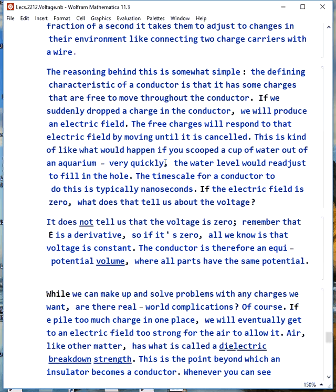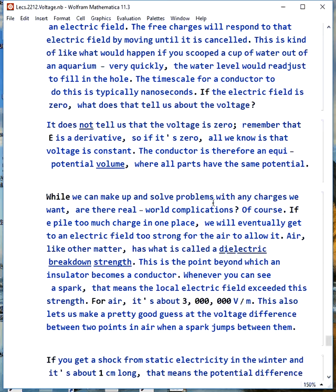It does not tell us the voltage is zero. Remember that E is a derivative, so if it's zero, all we know is voltage is constant. So, in that case, the conductor is an equipotential volume. All parts of it have the same potential.